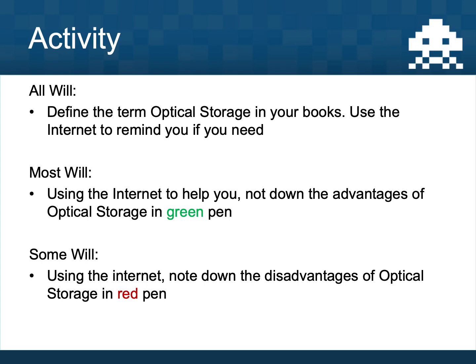Pause the video at this point and look at the three questions on your screen. Number one, define the term optical storage in your books — try to remember it from the previous slide but flick back if needed. Then use the internet to find the advantages and disadvantages of optical devices, writing advantages in green and disadvantages in red. Think about what's good and bad about CDs and DVDs — if you've ever used a CD that skips, think about why that might be. Give yourself about 10 minutes.